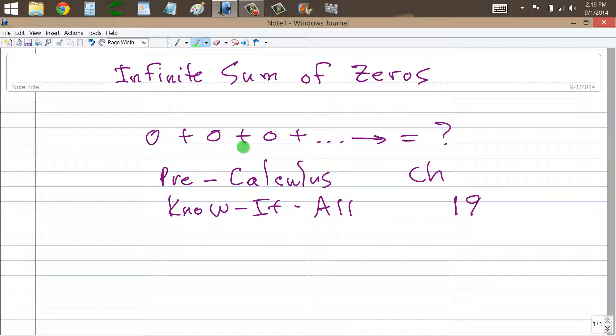is that the limit as n approaches infinity of the sum of the partial sums of this series, zero plus zero plus zero plus zero, as the number of zeros approaches infinity or continues forever and ever or without bound,